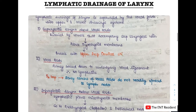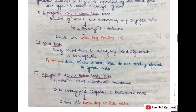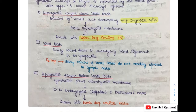The lymphatic drainage of the larynx is separated by the vocal folds into an upper and a lower drainage system. The supraglottic larynx — the part above the vocal folds — is drained by vessels accompanying the superior laryngeal vein. These pierce the thyrohyoid membrane and drain into the upper deep cervical nodes. The vocal folds, interestingly, are firmly bound to the underlying vocal ligament, and therefore have absolutely no lymphatics.